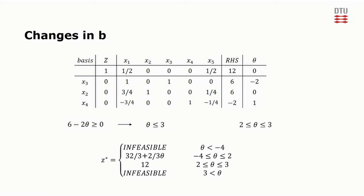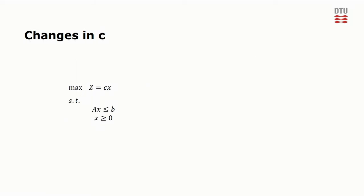We can also examine changes to the objective function using parametric programming. In this case, alpha times theta is added to the coefficient of the objective. Let's again consider the simple example. We define alpha as this and the modified problem looks like this.